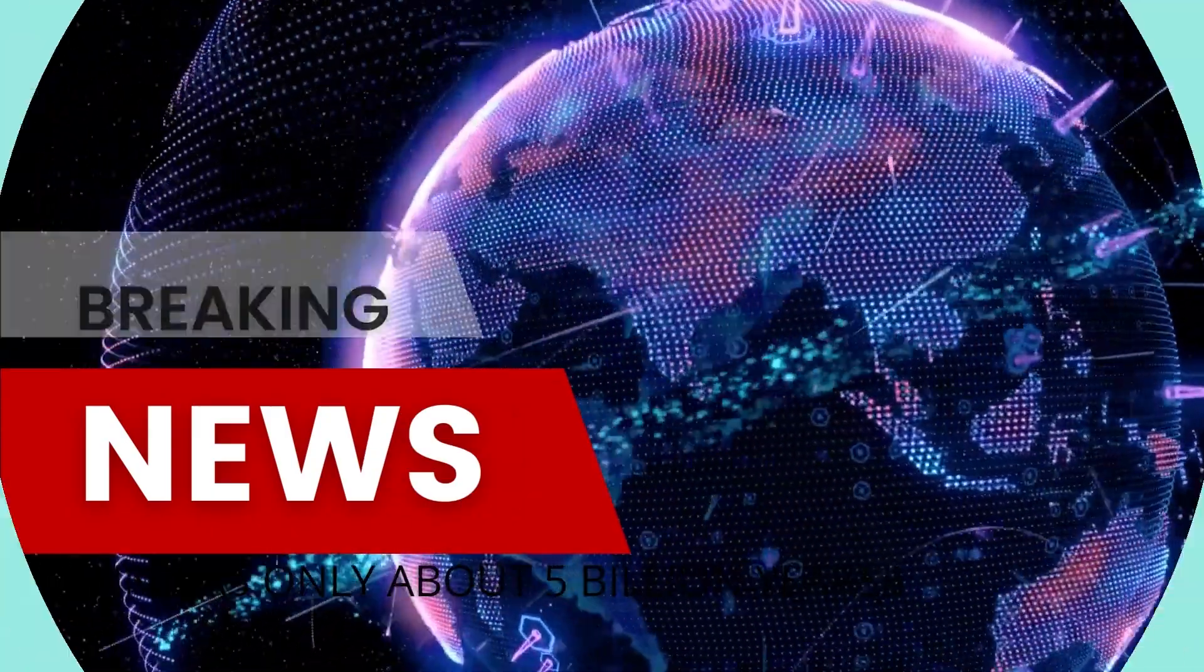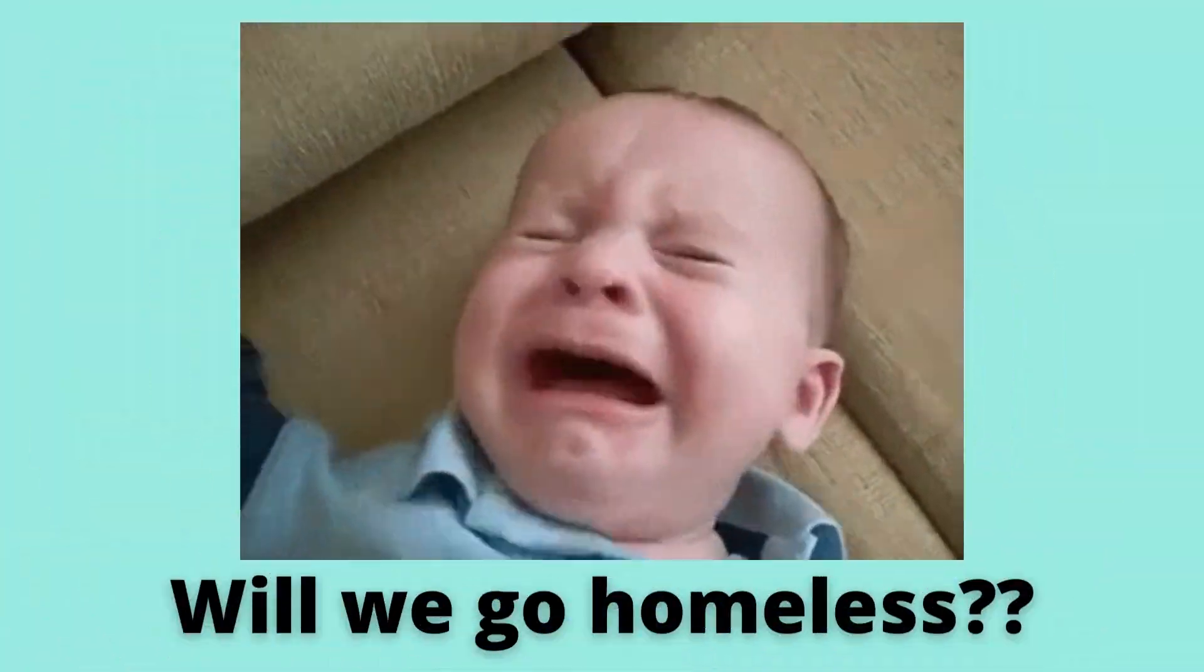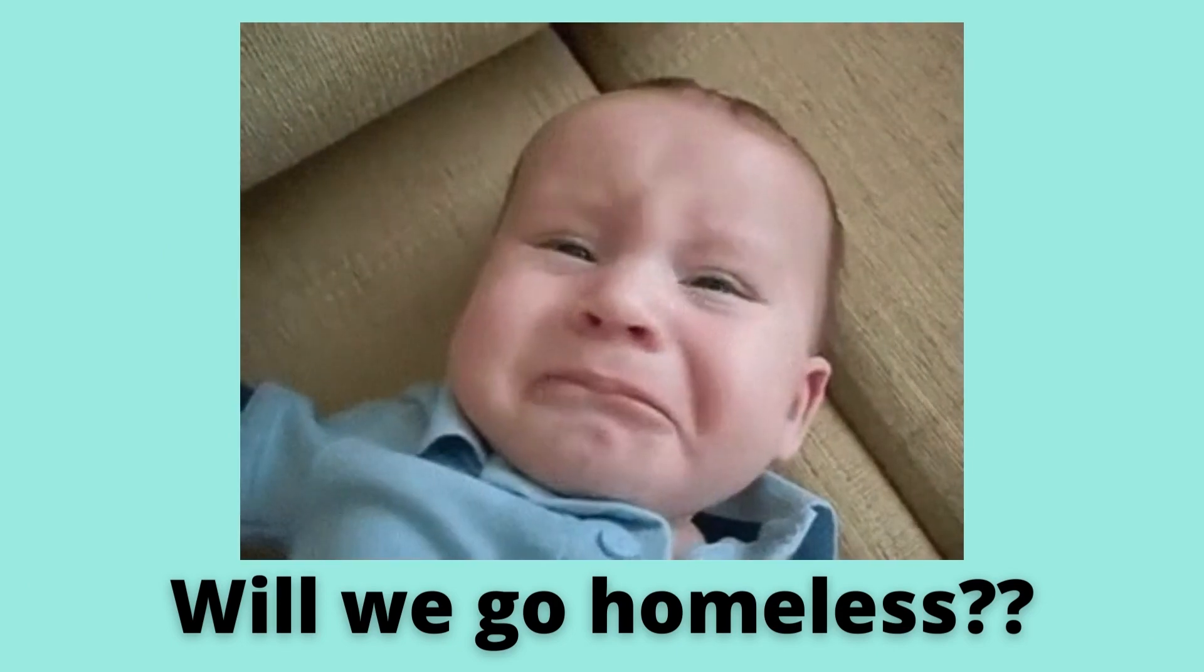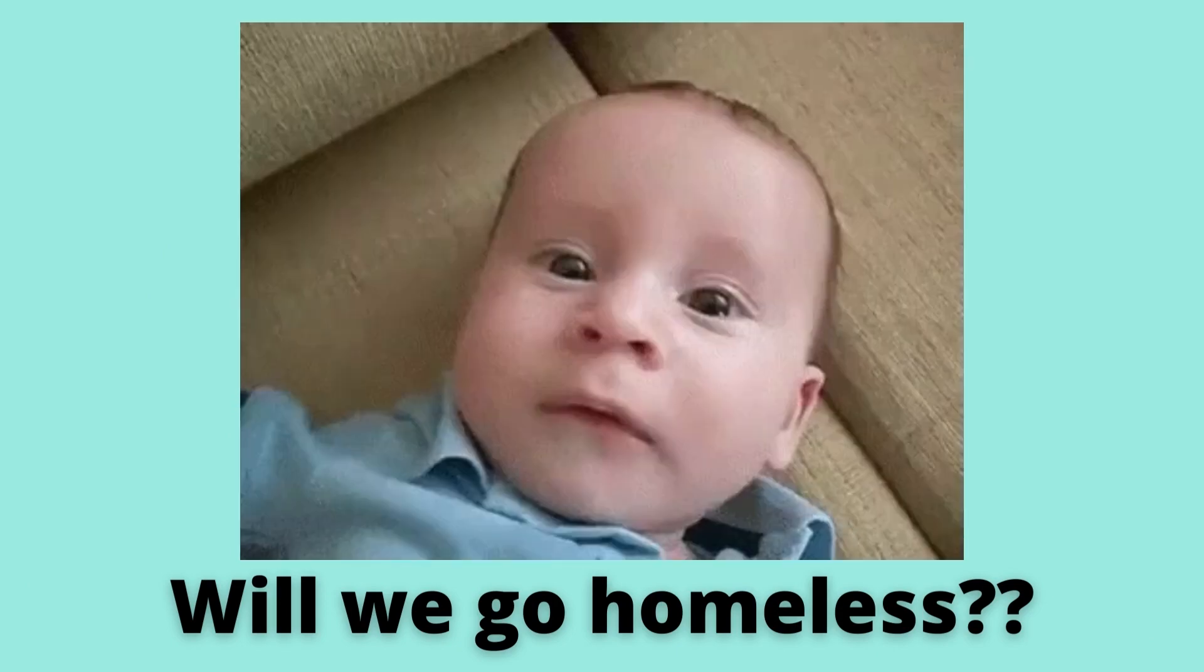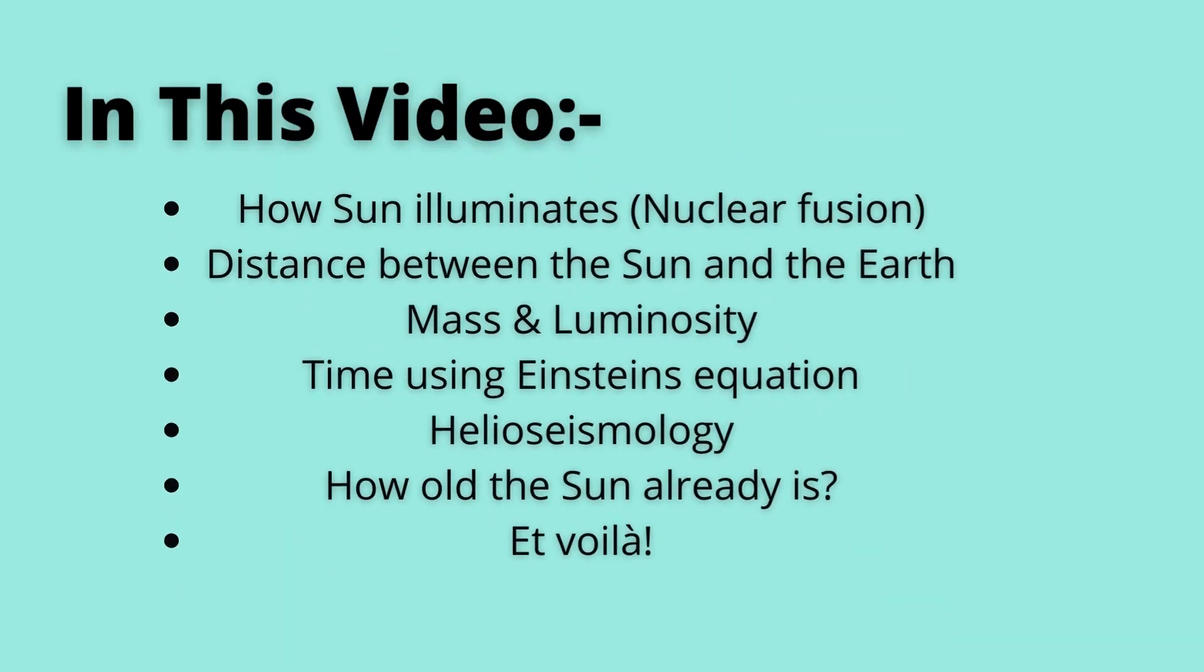The Sun has about 5 billion years to live. Does this mean we will go homeless? Well, actually only a few may survive till then, or any other species for that matter. But for sure, evolution has its role to play. Let's begin.